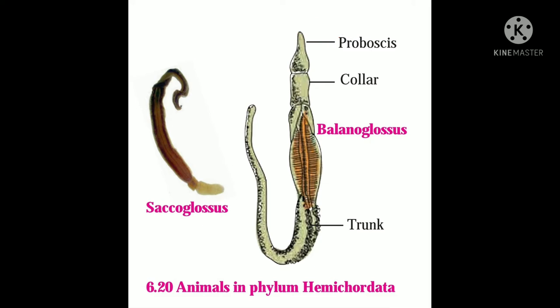The second character is that the notochord is present in the proboscis region only. Hence, they are called Hemichordata. Why are they called Hemichordata? Because the notochord is present in the proboscis region only.